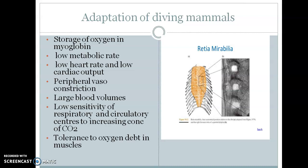Diving mammals are able to remain underwater for long periods by virtue of the following adaptations: storage of oxygen in myoglobin and venous blood reservoirs, low metabolic rate, low heart rate and low cardiac output, peripheral vasoconstriction, large blood volumes, low sensitivity of respiratory and circulatory centers to increasing concentrations of carbon dioxide and lactic acid, tolerance to oxygen debt in muscles, and the presence of retia mirabilia — an anatomical structure related to the ribs seen in some diving mammals such as dolphins.